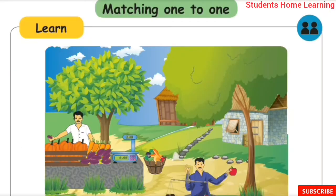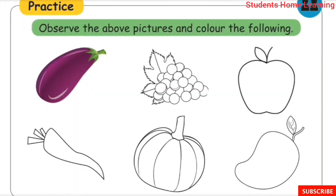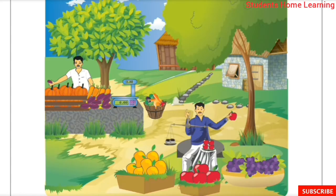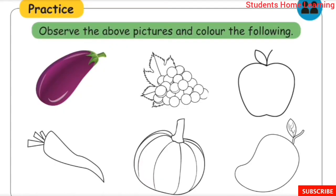Matching 1 to 1 — Learn: one number is matched. Practice: observe the above pictures and color the following. Color the pictures shown here.